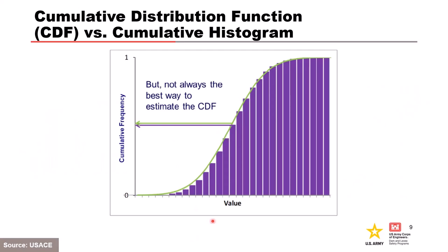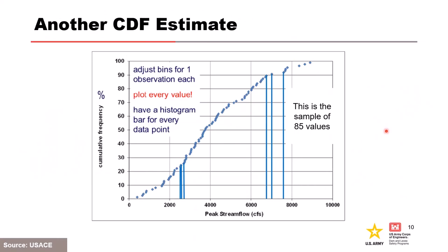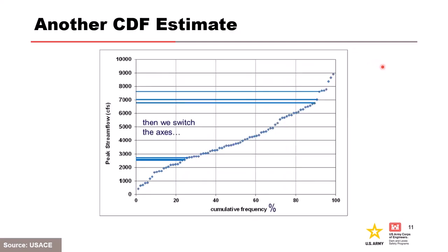However, the cumulative histogram is not the ideal representation of the CDF. A better estimate involves plotting all data points rather than condensing them into a histogram using flow ranges. It generalizes the histogram idea by assuming bins are sized so there is one value per bin. For the sample of 85 values, the vertical lines approximate this as a form of cumulative histogram — in practice, we would have a single histogram bar for each of the 85 peak annual data points. The axes are switched to put the variable on the vertical and the frequency on the horizontal. The cumulative frequency increases by the same amount with each event because the count of events equal to or below that value increases by one each time.